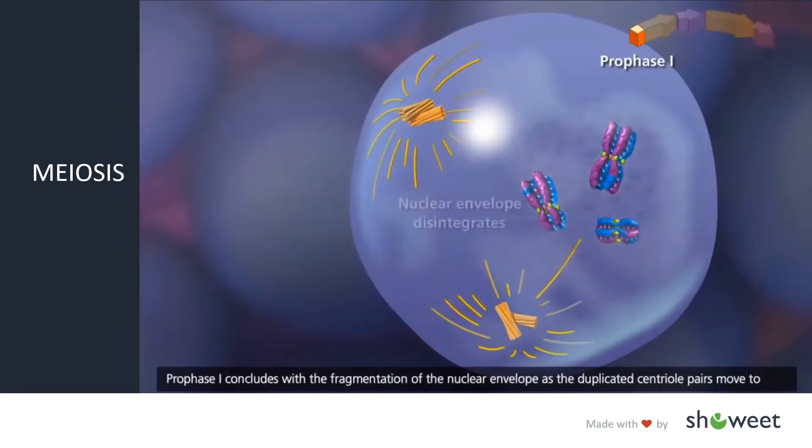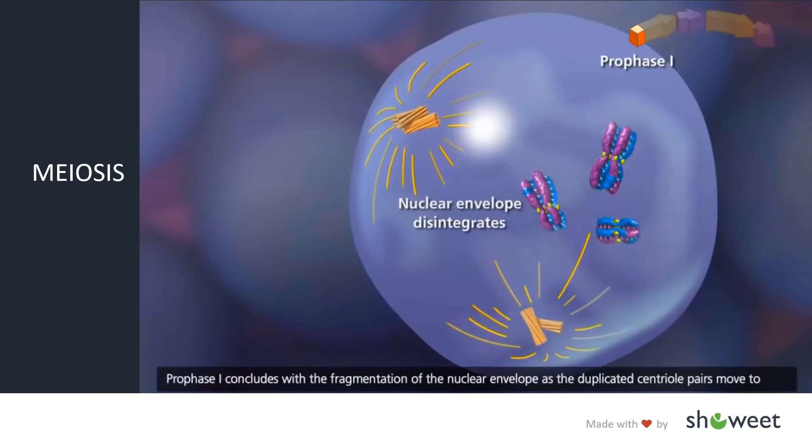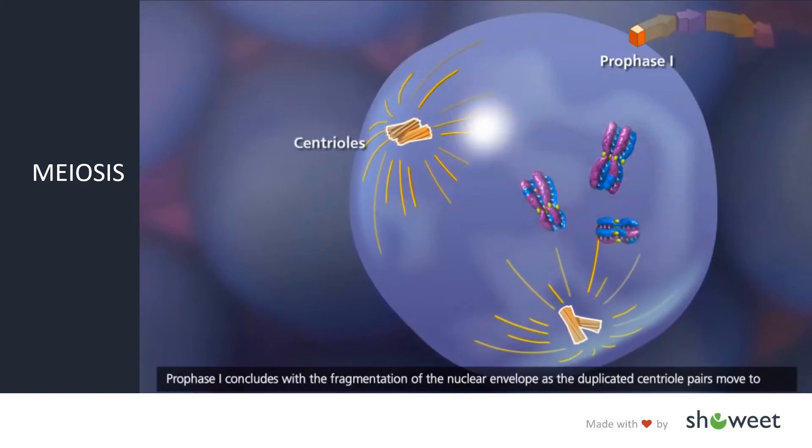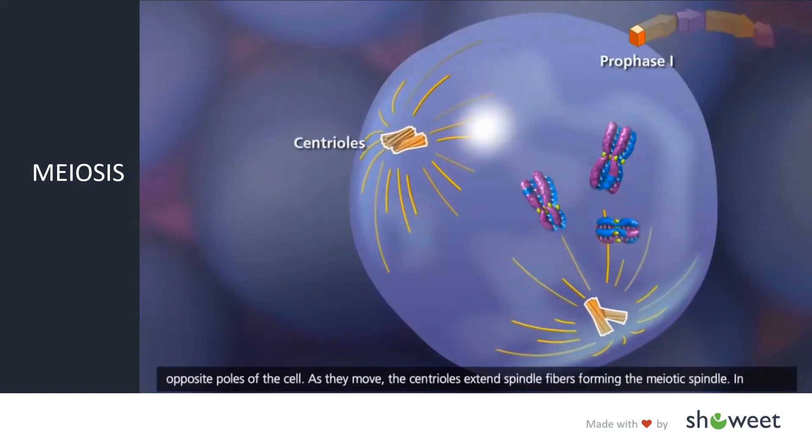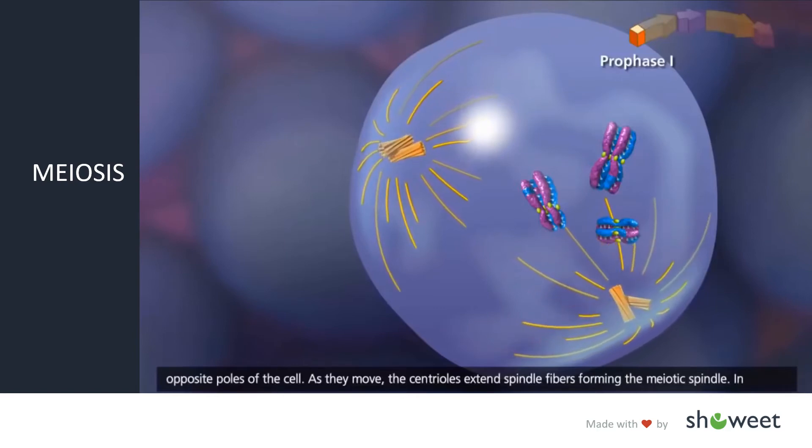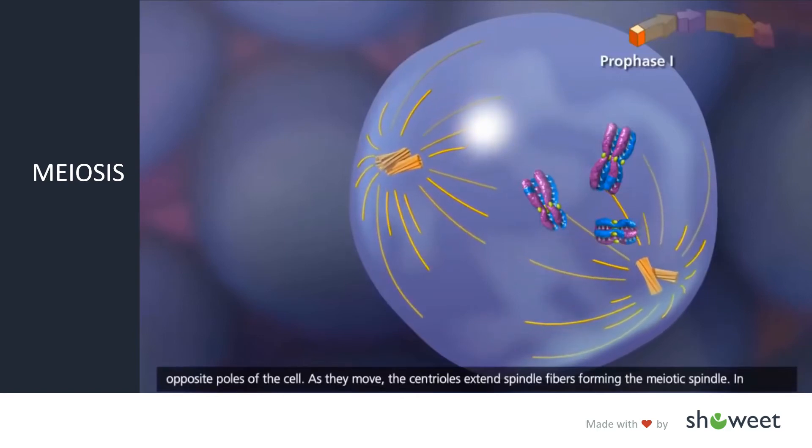Prophase I concludes with the fragmentation of the nuclear envelope as the duplicated centriole pairs move to opposite poles of the cell. As they move, the centrioles extend spindle fibers forming the meiotic spindle.